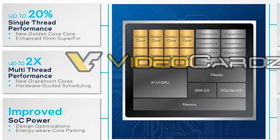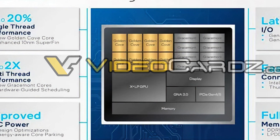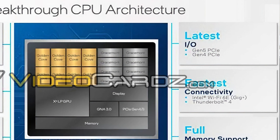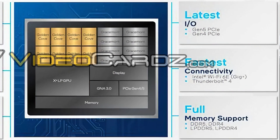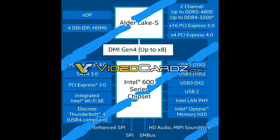Improved SOC power, including energy-aware core parking. Latest IO for Gen 5 and Gen 4 connectivity, such as Wi-Fi and Thunderbolt 4. Full memory support — both DDR4 and DDR5 are supported along with the LP derivatives. And finally, you can see some platform information: two-channel DDR5, which I find interesting given the bitrate of DDR4 and 5. But we'll wait on that, of course. It's all about the performance.